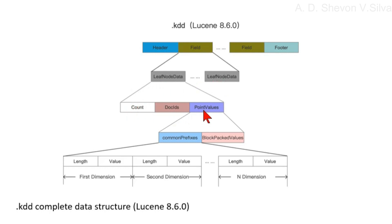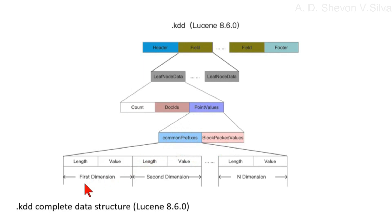Point values consist of common prefixes and block packed values. Common prefixes consist of dimensions — first, second, and so on — where each dimension consists of a length and a value.